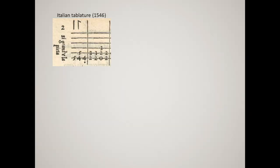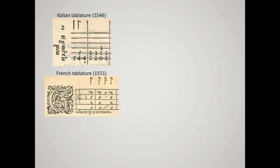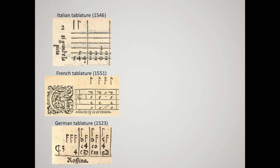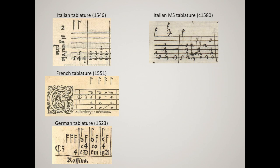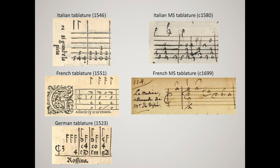That's one of the motivations for getting involved with computers. Lute music is nearly always notated in a system called tablature, and I'll show you just some examples. Here's a little snippet of Italian tablature from 1546, then a bit of French tablature from 1551, a bit of German tablature from about a generation earlier. They look very different, but they're all telling you the same thing. On the left is printed music; on the right, a couple of examples of manuscripts — one from Italy from the end of the 16th century, and one from France from the end of the 17th century.